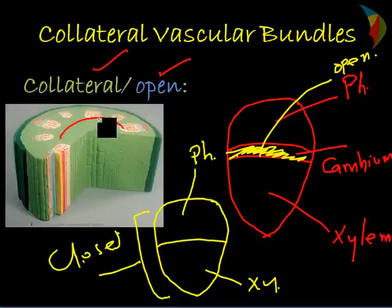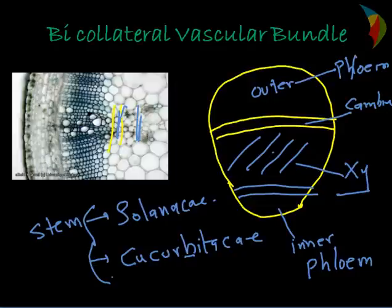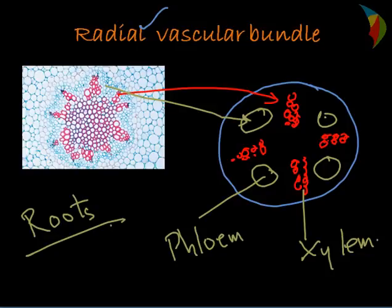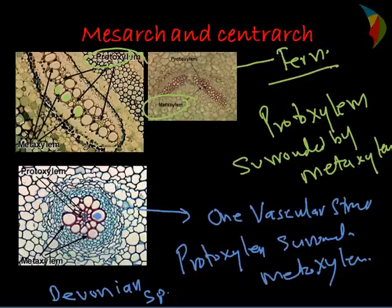To revise: we have the collateral vascular bundle, with open type as a characteristic of dicot plants and closed type as a monocot characteristic. Then we have the bi-collateral vascular bundle, found in the stem of Solanaceae and Cucurbitaceae. Radial vascular bundle is mostly found in roots, where phloem and xylem are in alternating arrangement. Then we have exarch and endarch types, and lastly mesarch and centrarch types, with examples of fern and Selaginella species. This completes the details of types of vascular bundles and their arrangement based on xylem. Thank you.